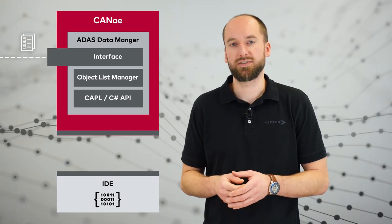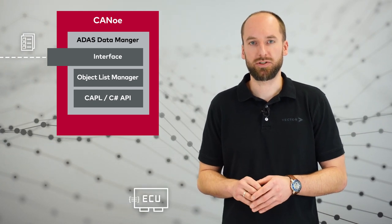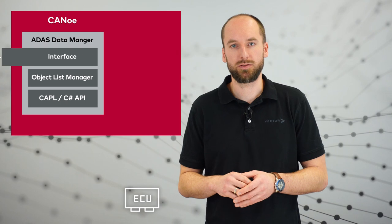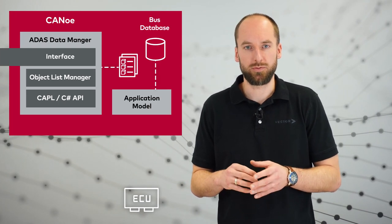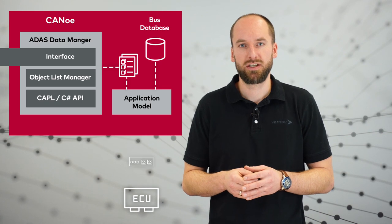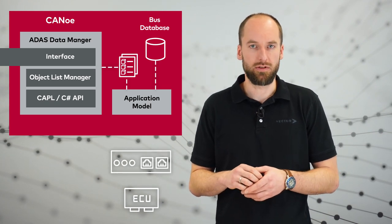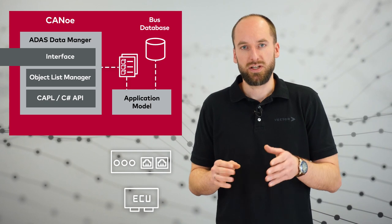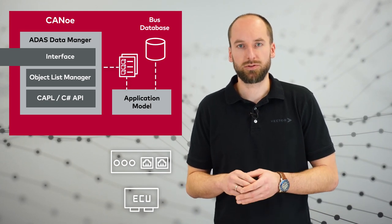Once you have left the software-in-the-loop phase and your ADAS function code has been ported to an ECU, the advantages of CANoe as a multi-bus tool kick in. You can map the previous object or object lists to any type of bus communication and use Vector interfaces to generate real traffic with it. In this case, it doesn't matter if it's CAN, SUM IP, or whatever else your project requires.